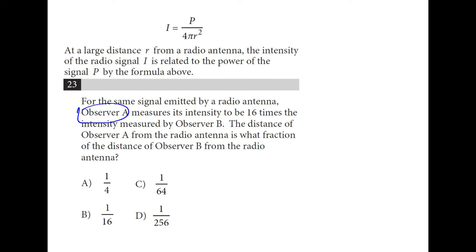Observer A measures the intensity that's 16 times bigger than observer B. So we can compare the two that way. Intensity in this equation is right here. So A is what fraction of the distance of observer B. So what can I plug in for R to get a multiple of 16?